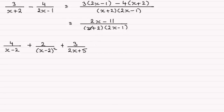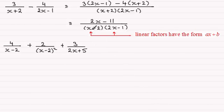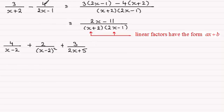When it comes to working with partial fractions, we have to look at the kinds of factors we've got in the denominator. In this example, what we've got are called linear factors. They have the form ax plus b. In this example, x plus 2 — the a would be 1 and b would be 2. And in this factor, 2x minus 1 — a would be 2 and b would be minus 1. So we've got linear factors.